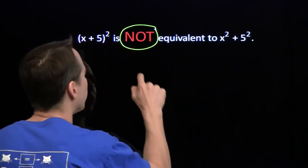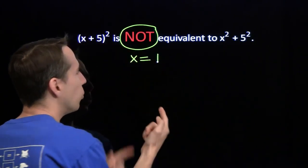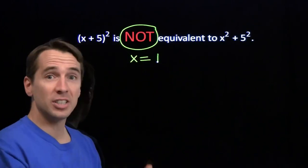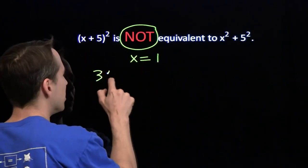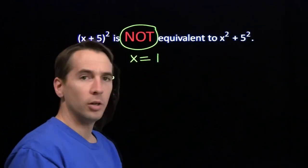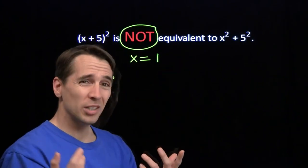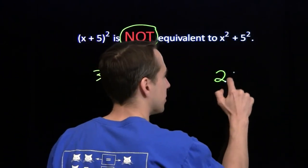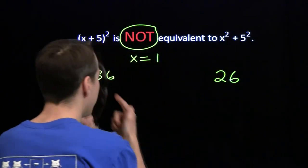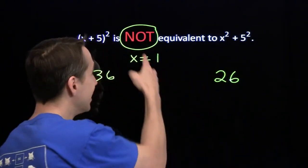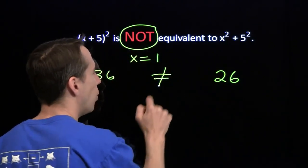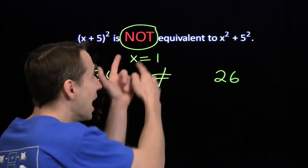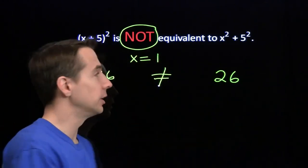If you don't believe me, let's try x equals 1. Put x equals 1 in: 1 plus 5 is 6, and 6 squared is 36. Put the 1 in the other side: 1 squared is 1, add on 5 squared which is 25, you get 26. 36 is not 26. These two are not equivalent. Not equivalent.